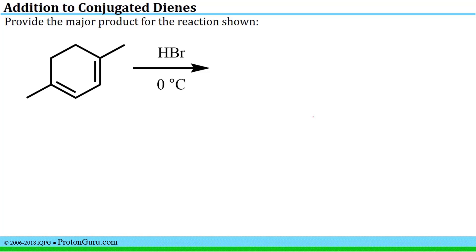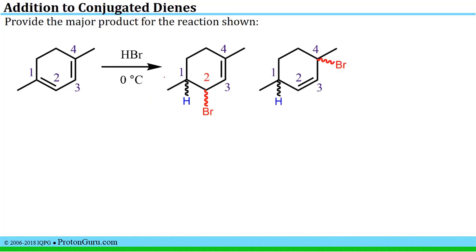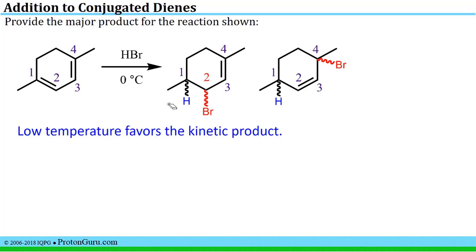Now let's take a look at another example. Here we have a dimethylcyclohexadiene reacting with hydrobromic acid at a low temperature, which will favor the kinetic product. Numbering the pi-conjugated chain 1, 2, 3, 4: the 1,2 addition product looks like this, and the 1,4 addition product looks like this. Both have two chiral centers each, and these reactions are not stereospecific, so squiggly lines are used and you'd have mixtures of isomers. Because the low temperature favors the kinetic product, the 1,2 product is the major product.